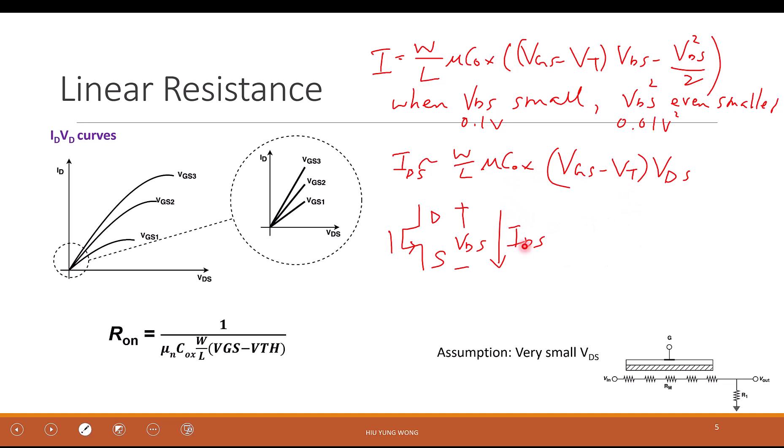Well, if you only look at this two terminal, then isn't that Vds divided by Ids equals to 1 over W over L, mu C_ox Vgs minus Vt. Do you see that? I just put Vds here, move Ids to the right, and then move this whole thing to the left. It becomes 1 over this whole thing.